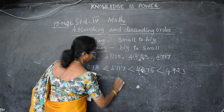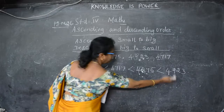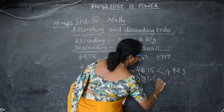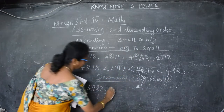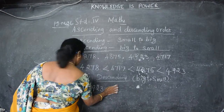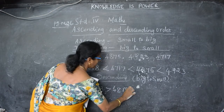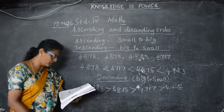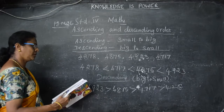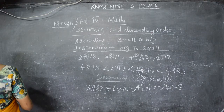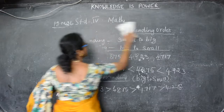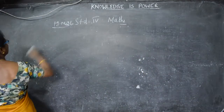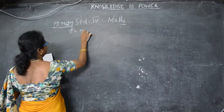Now descending order. Descending means biggest number to smallest number. So from the same set: 4,923 first, then 4,875, then 4,717, then 4,278. This is the descending order. Okay children, now shall we move on to exercise number 2.4.